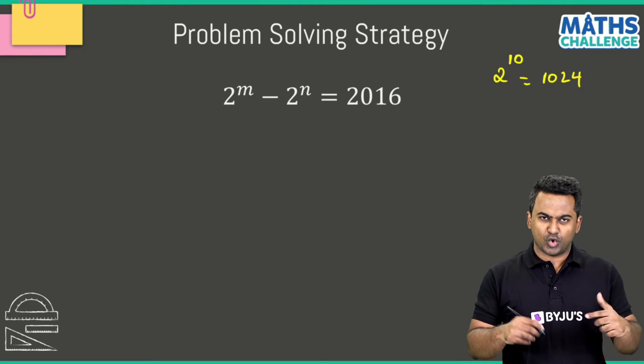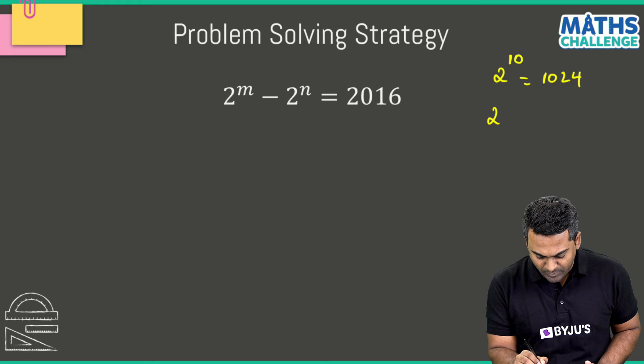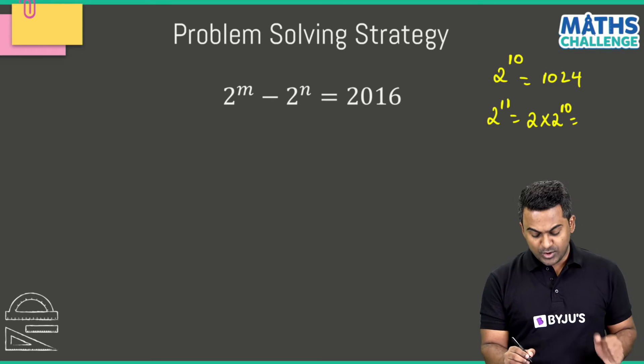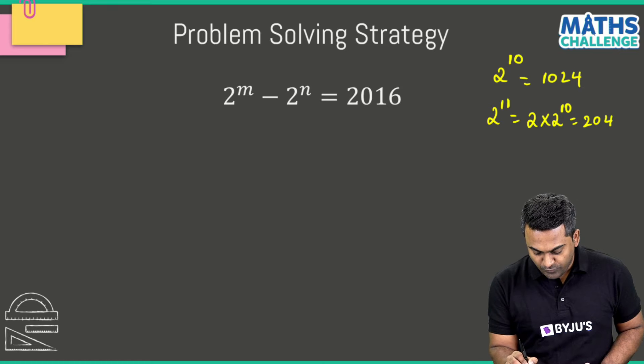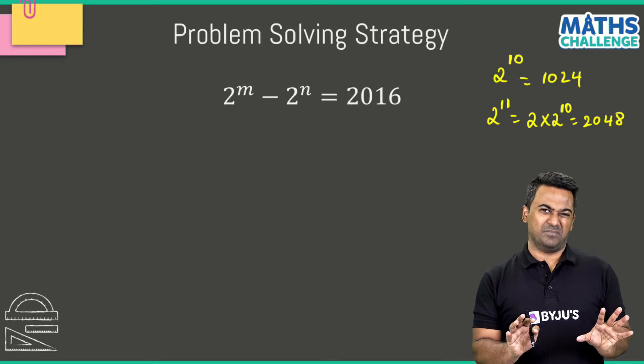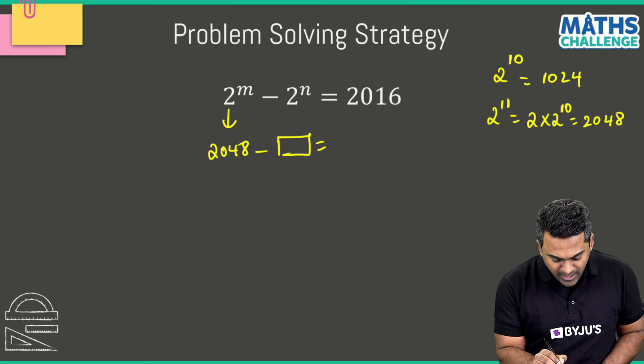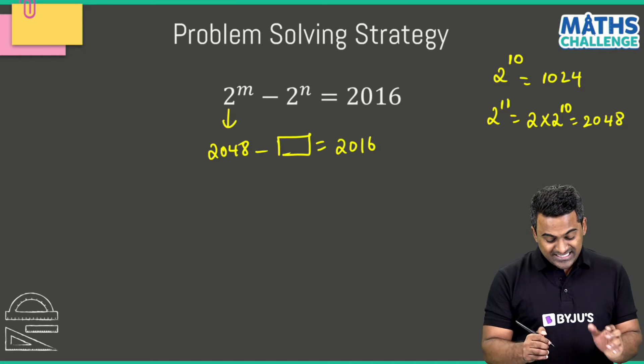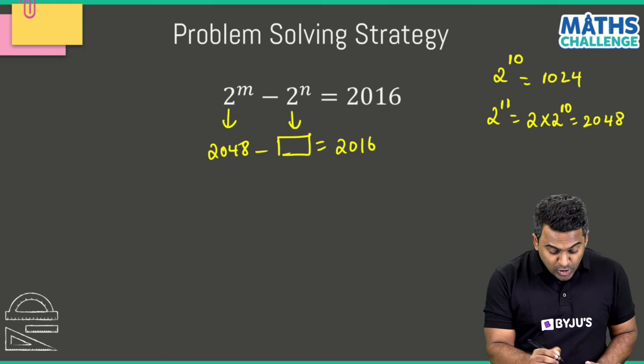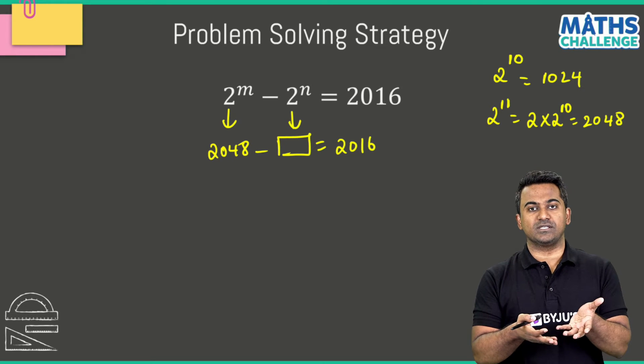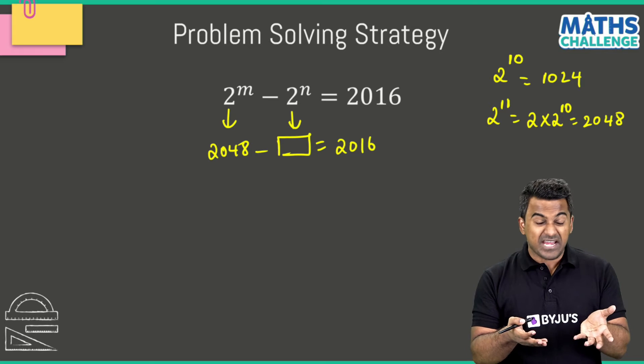Right, fine. So you've got to step up a little further. Now 2 to the power 11, as you know, is 2 multiplied with 2 to the power 10, so 2 times 1024 is going to be 2048. So yeah, it looks fine. I mean yes, this could be 2048 and then minus something you are going to get 2016.